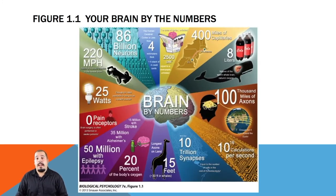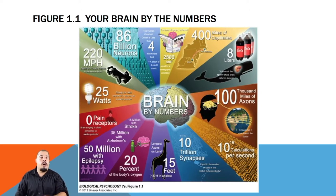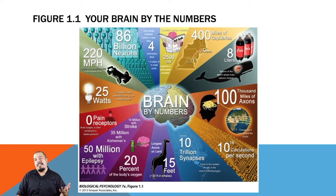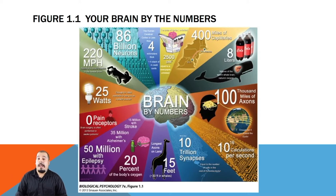Here are some interesting facts about the neurons in your brain. A favorite is that if you were to unravel all of your axons in your brain, you'd have enough to wrap them around the earth four times. Another interesting one is that there are no pain receptors on the brain — thankfully, because many types of brain surgery are done while you are awake.